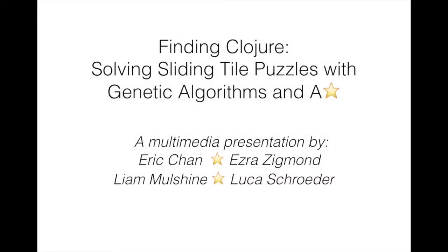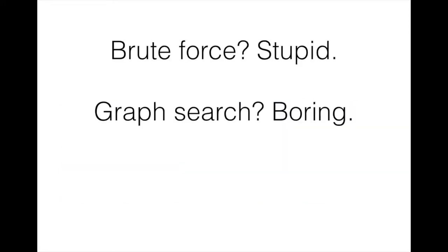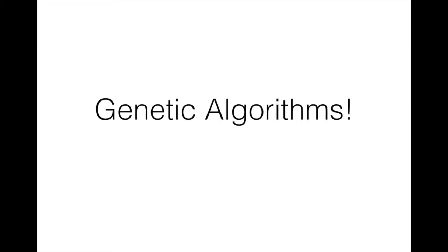Today on Finding Clojure, we encounter the sliding tile puzzle. I certainly can't solve one of these — can you? Why not have the computer solve it? How about a brute force approach? That's stupid. How about a graph search approach? Well, that's boring. Why not try something new?